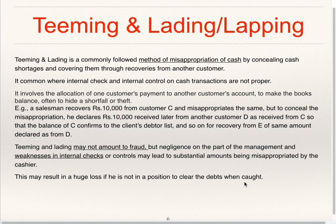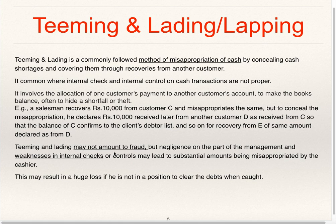For example, if a cashier receives Rs. 10,000 from debtor C but misappropriates it, he will show the amount received from debtor D as received from C, and later from E as received from D. He keeps clearing old debtors' balances. If he is unable to pay back when caught, there will be a huge loss to the organization. His intention may not be fraud but results from internal weaknesses.